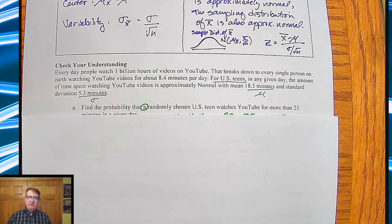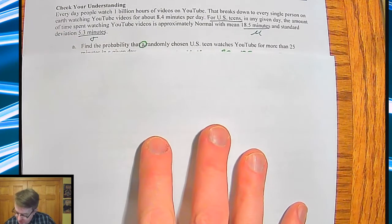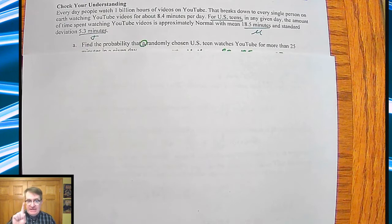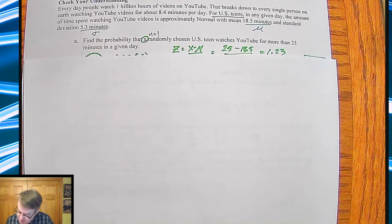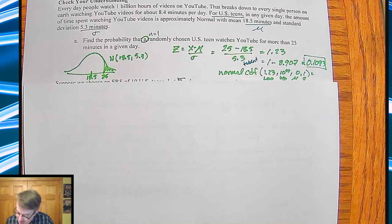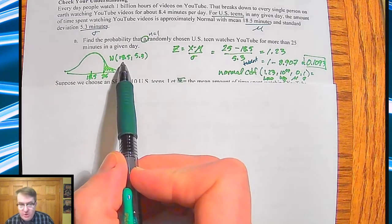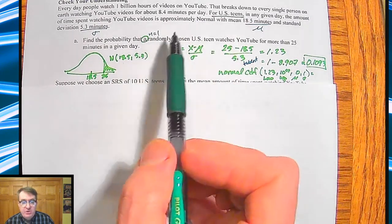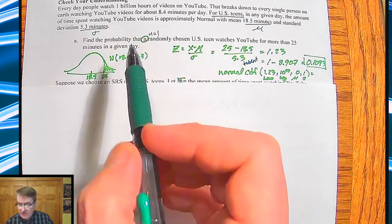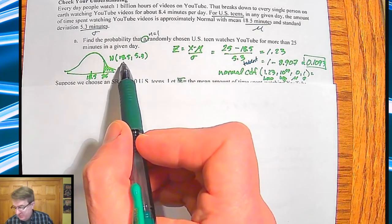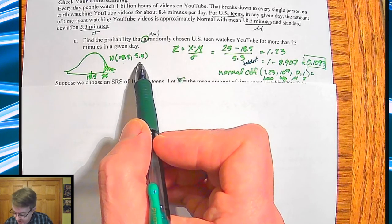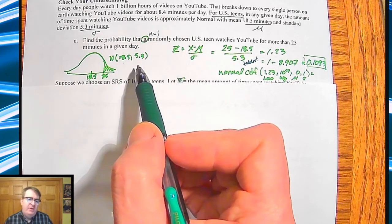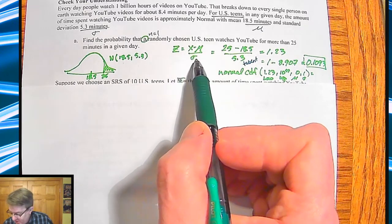You didn't hit pause fast enough. Here we go. So the first question is find the probability that a single one, so n is equal to 1 here. A randomly chosen U.S. teen watches YouTube for more than 25 minutes in a given day. So you've got your normal curve. Our standard deviation and mean is just going to be the population numbers, because, let's face it, 5.3 divided, the means are going to stay the same. Secondly, 5.3 divided by the square root of 1 is 5.3. And third of all, it's just 1 from the population. So you've got your Z-score here.